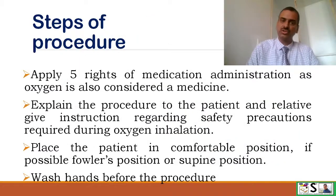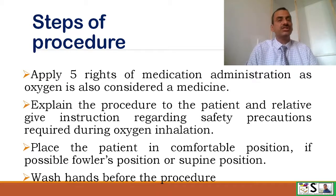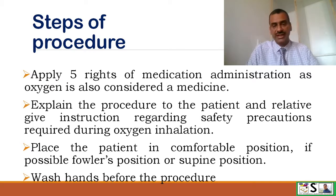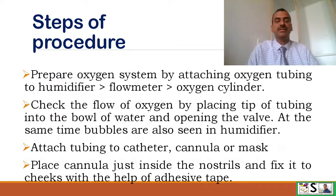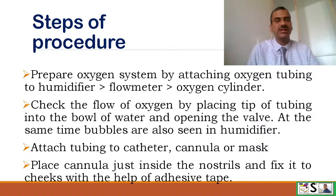Now the steps of the procedure. First, apply all five rights of medication administration, as oxygen is considered a medication: right patient, right route, and so on. Explain the procedure to the patient and relatives, and give instructions regarding safety precautions required during oxygen inhalation. Place the patient in a comfortable position — Fowler's position is best, though supine position can also be given. Wash hands before starting the procedure. Then prepare the oxygen system by attaching oxygen tubing to the humidifier, which is then attached to the flow meter and finally to the oxygen cylinder or oxygen source.